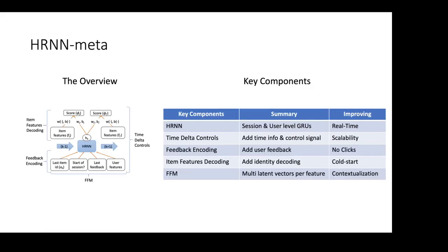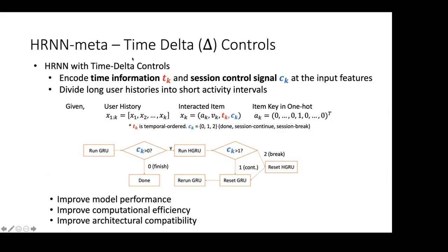HRNNMeta is presented in this work. The overview may look confusing but it builds on HRNN as a baseline for the real-time problem, and adds time delta controls, feedback encoding, item features decoding, and FFM — components that together address scalability, cold start, and contextualization. The time delta controls encode temporal information.